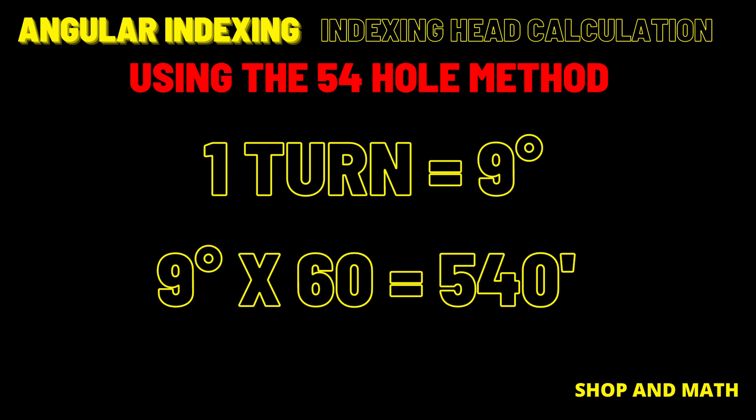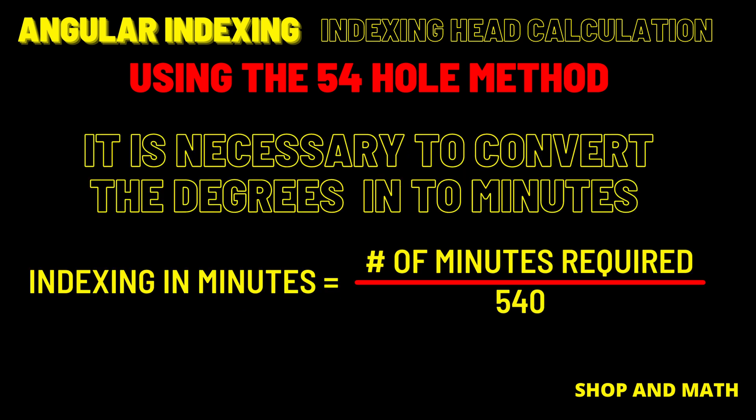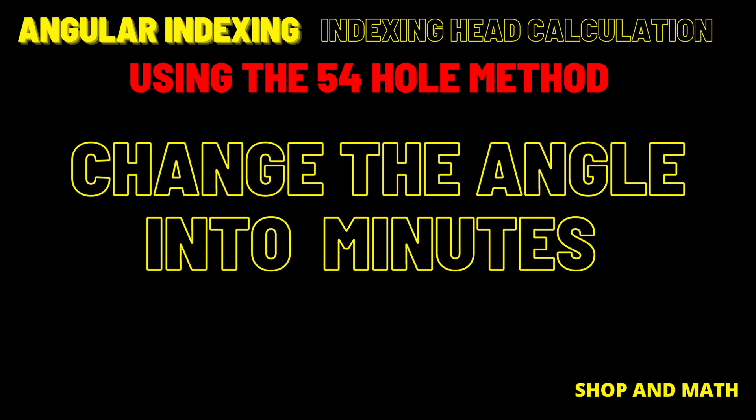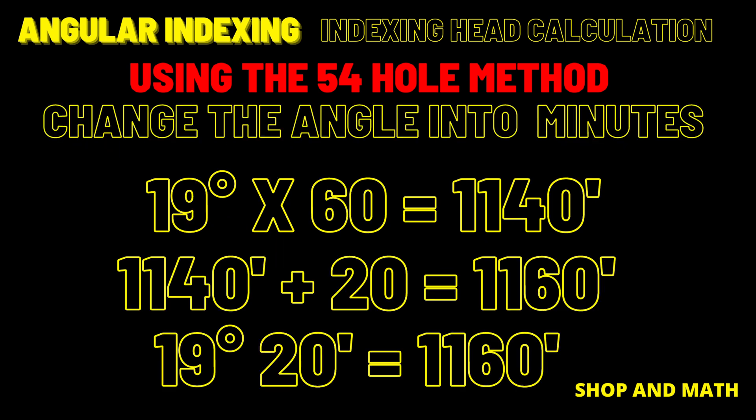If one turn equals 9 degrees, there's 60 minutes in each degree. Therefore 9 times 60 will be 540 minutes. Using the 54 hole plate method it is necessary to convert the degrees into minutes. This is the formula that we're going to use. We need to change our degrees into minutes. 19 times 60 equals 1140 minutes. 1140 plus 20 equals 1160 minutes. Therefore 19 degrees 20 minutes equals 1160 minutes.